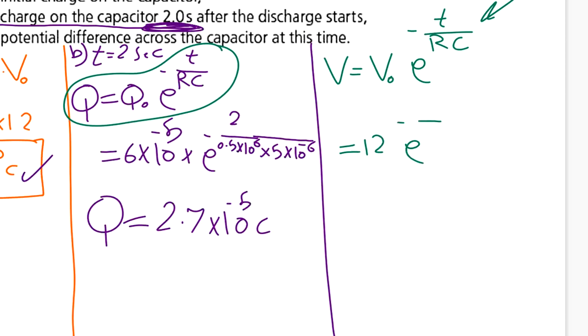E to the power negative, t is 2, R is 0.5 times 10 to the power 6, C is 5 times 10 to the power negative 6. I substitute the numbers in a calculator and I get V equals 5.4 volts. This is the potential difference after 2 seconds. This is one way.